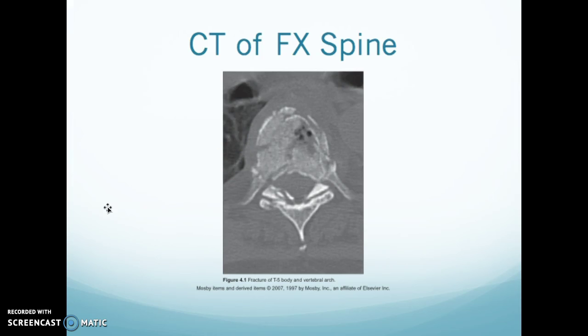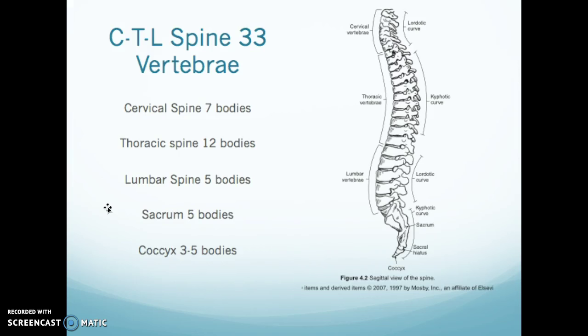There are 33 total vertebrae. In the cervical spine there are 7 bodies, thoracic 12, lumbar 5, sacrum 5, and then the coccyx has 3 to 5 bones depending on the person.